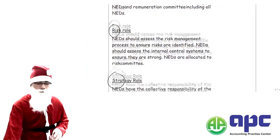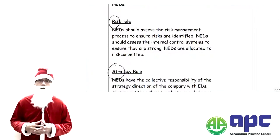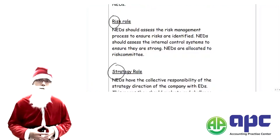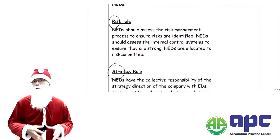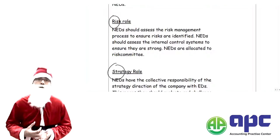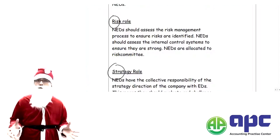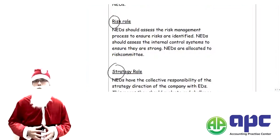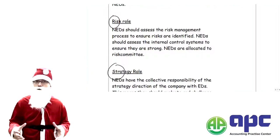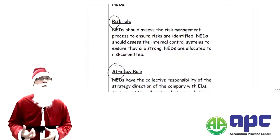The second R stands for the Risk role. Non-executive directors will form the audit committee, sometimes also called the risk committee. The audit committee is responsible for ensuring a good internal control system within the organisation and for managing the risks that a company is facing effectively. This also means making sure that the executive directors' decisions are not excessively risky.